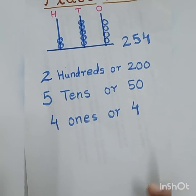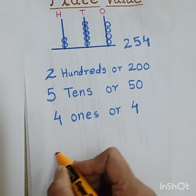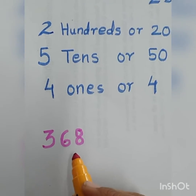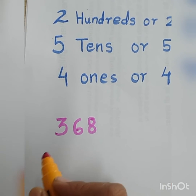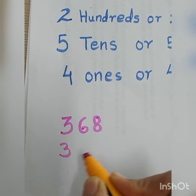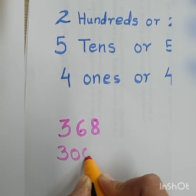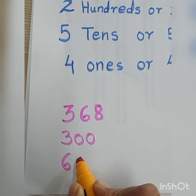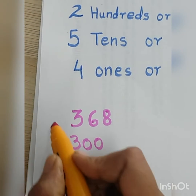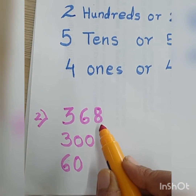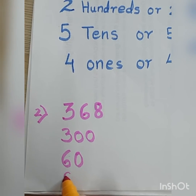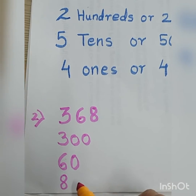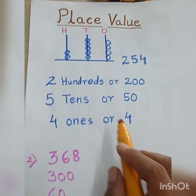We will take one more example. I have number 368. Now I want to write the place value of each digit. I will start with number 3 — it is at hundreds place, so the place value is 300. Then for 6, which is at tens place, the place value is 6 tens or 60. After that, the place value of 8, which is at ones place, is 8. So like this we can write the place value of each digit according to the position of the given number.